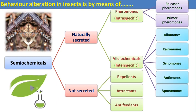If you see this slide, there are two types of semiochemicals: naturally secreted by insects and not secreted by insects. In naturally secreted, pheromones and allelochemicals are most important. Pheromones are used in intraspecific communication of insects, and allelochemicals are used in interspecific communication of insects.